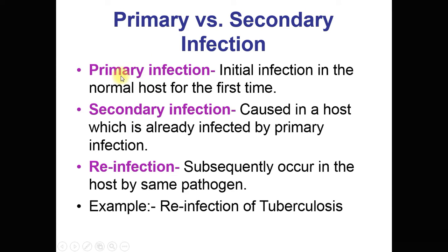Primary infection, as the name indicates, is the initial infection in the host — the host was normal before, and the pathogen enters for the first time and produces infection. It is caused by the primary pathogen. Secondary infection occurs in a host already infected by a primary infection — while that primary infection is present, a secondary pathogen enters and causes the secondary infection. So secondary infection occurs in the presence of the primary infection.